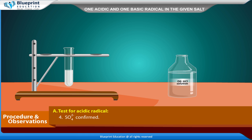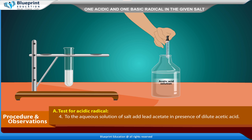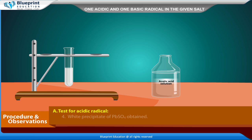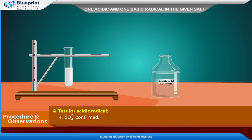To the aqueous solution of salt, add lead acetate in the presence of dilute acetic acid. White precipitate of PbSO₄ obtained. SO₄²⁻ confirmed.